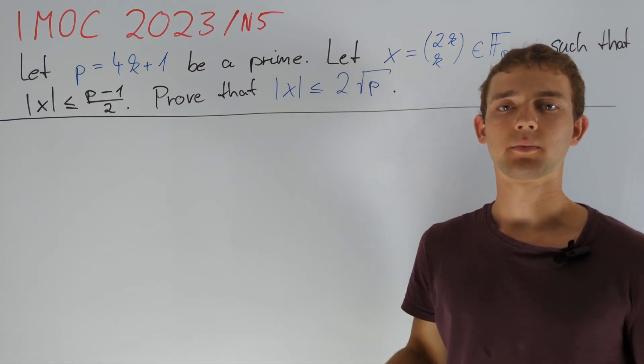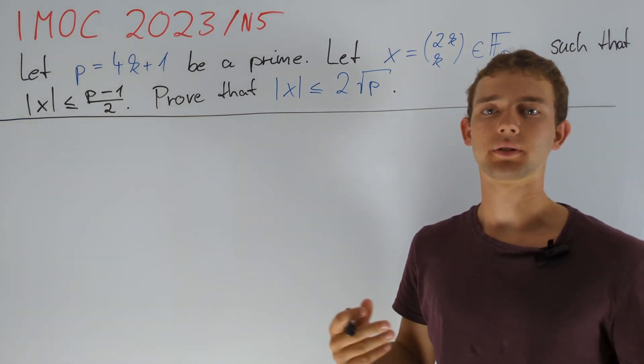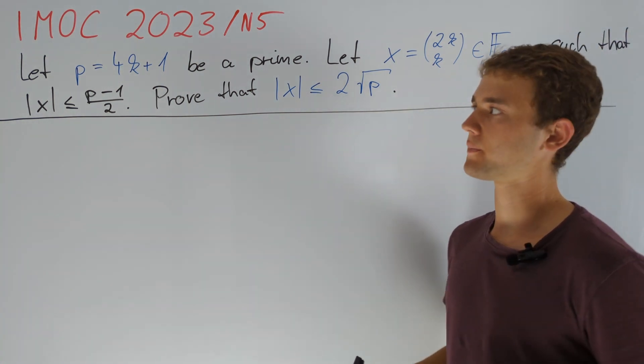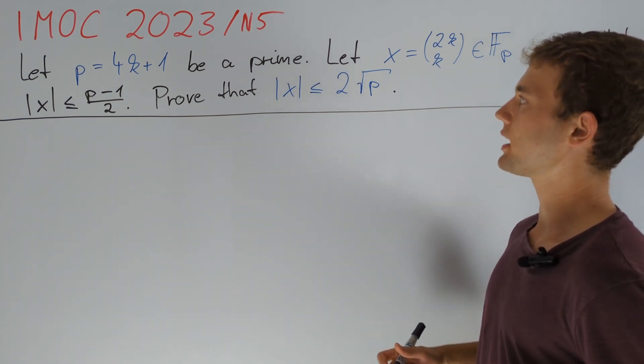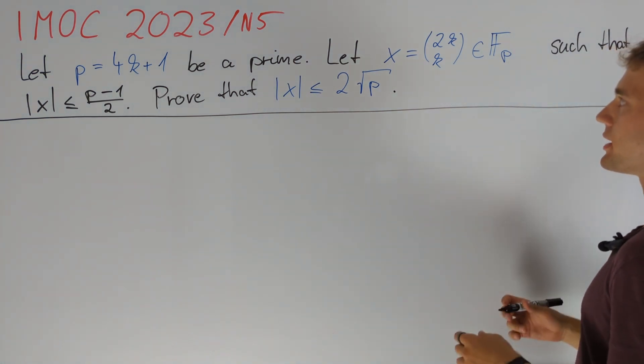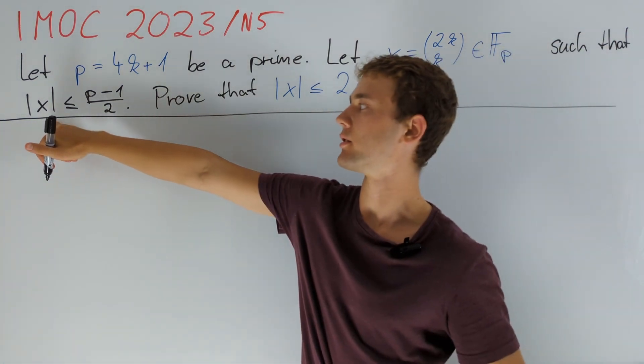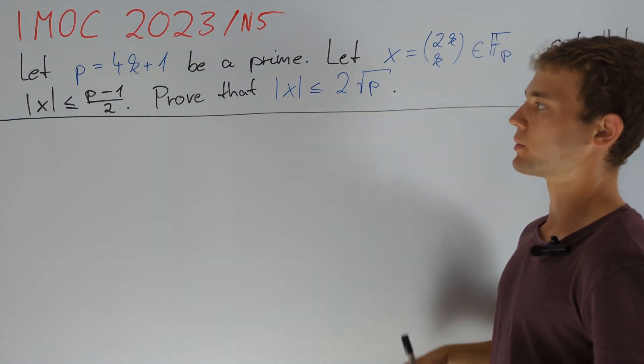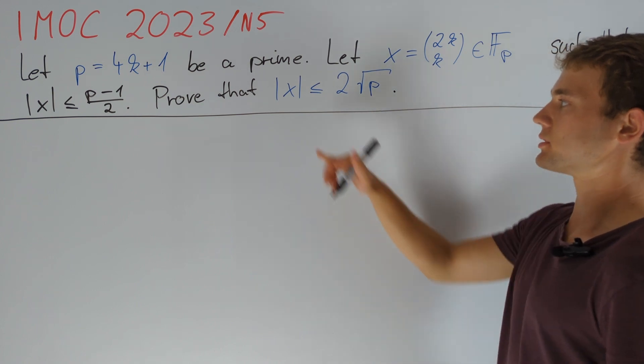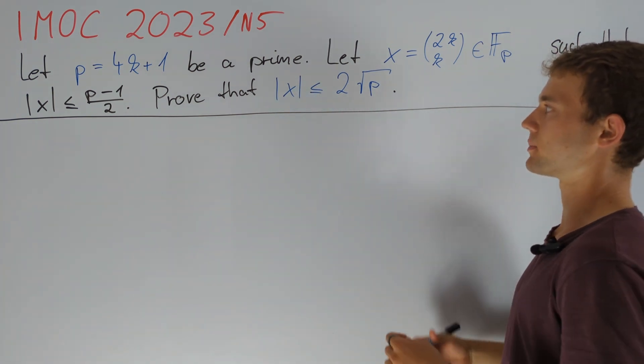Hey guys, this is chapter 1 of a proof of a number-theoretic result from IMOC 2023 problem N5. We consider a prime p equal to 4k plus 1 and define x to be the residue of 2k choose k when divided by p such that the absolute value of x is less than or equal to (p-1)/2. We are asked to prove that the absolute value of x is less than or equal to 2 times the square root of p.